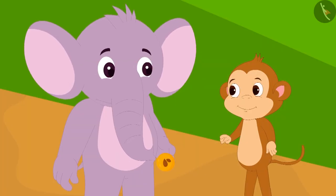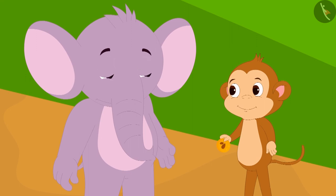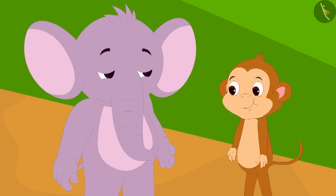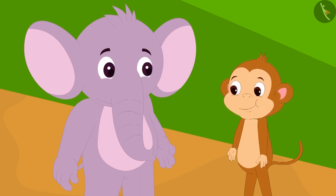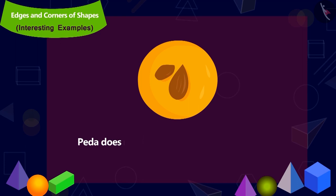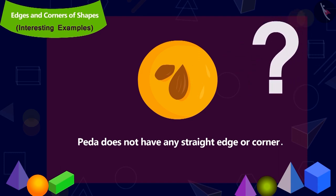Now Appu had understood Babban's trick. This time, he gave Babban a pera. Babban was confident that this time too he will answer correctly, so he quickly ate the pera. Now Babban started thinking. He answered that a pera has no corners and no edges. Children, is Babban's answer correct?